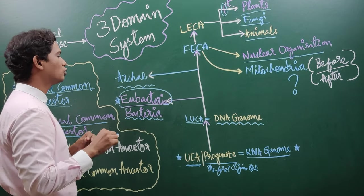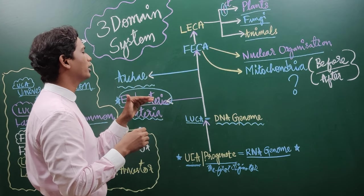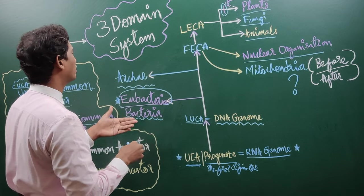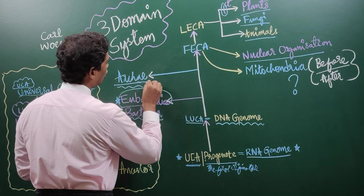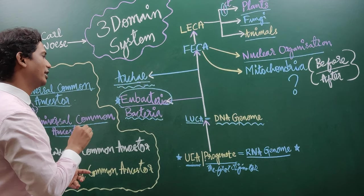After giving rise to eubacteria, LUCA again started progressing and gave rise to another organism, that organism is Archaea. This is the first domain according to Carl Woese.